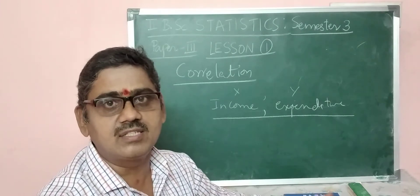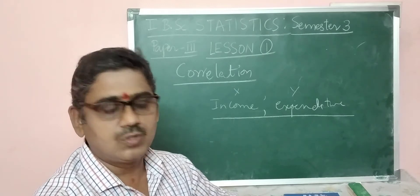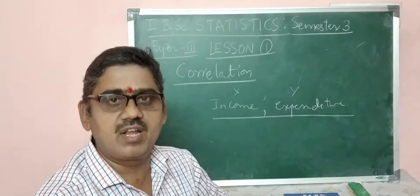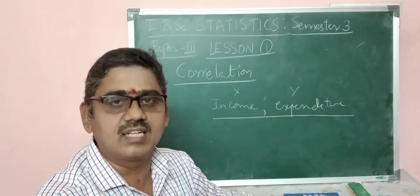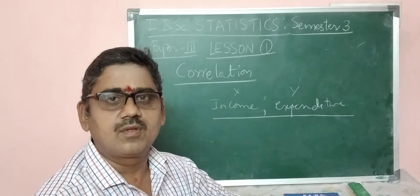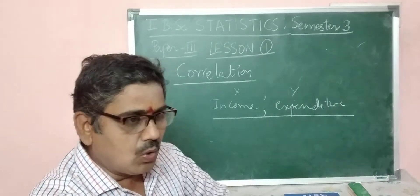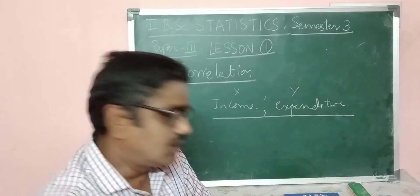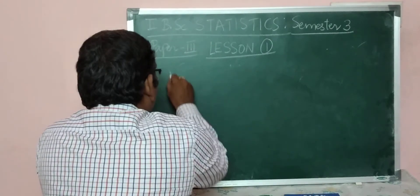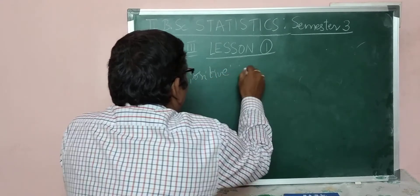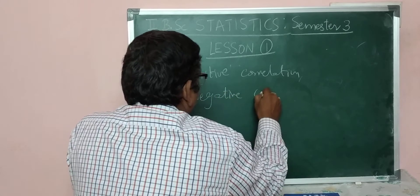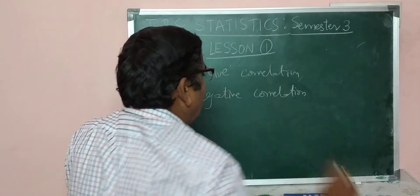Correlation is simply the relation between two variables. We are discussing bivariate data and bivariate distribution. The relation between two variables is nothing but correlation. We have many examples, which I will tell you in the various types of correlation. Now, what are the types of correlation? There are two types of correlation: 1. Positive correlation, and 2. Negative correlation.